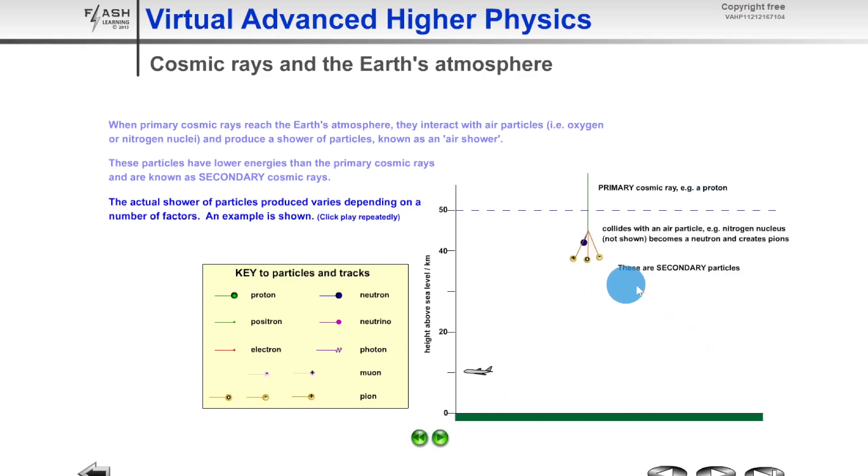secondary particles like this. So it collides with an air particle, for example a nitrogen nucleus, becomes a neutron and creates pions. And these are secondary particles. And these secondary particles can decay further. So for example, here we've got some pions decaying into gamma, muons and neutrinos. And these particles can decay even further to get down to the